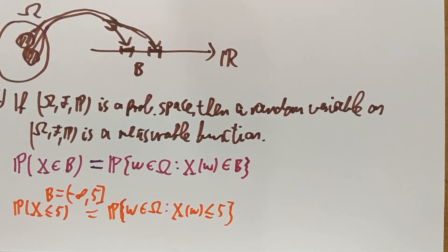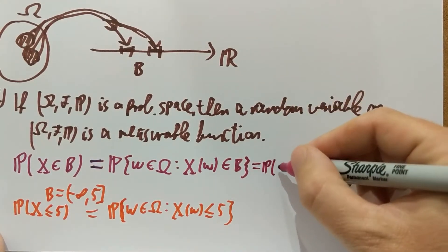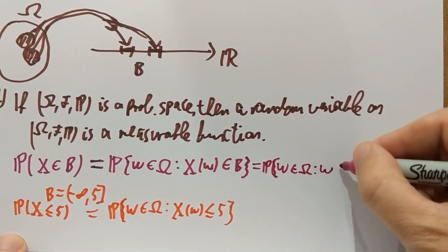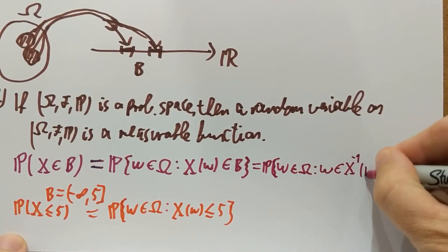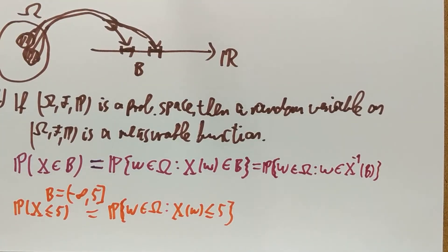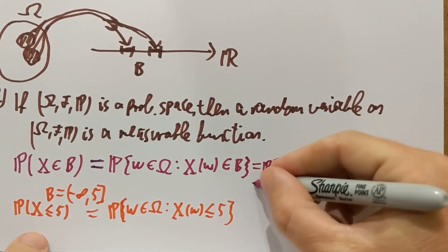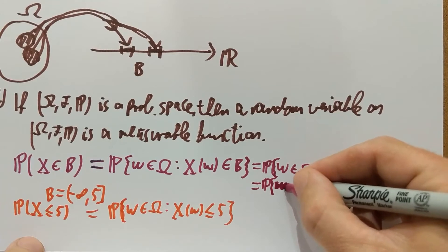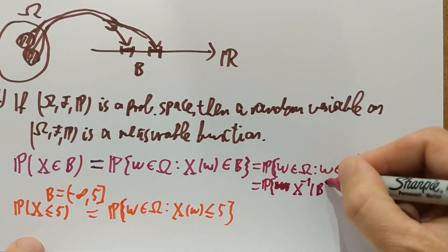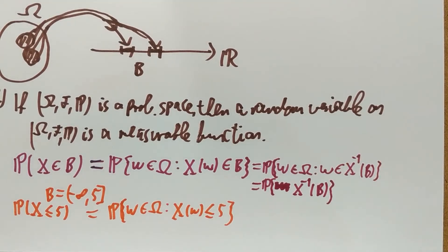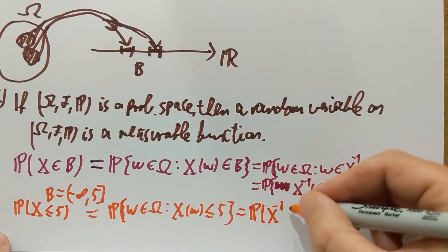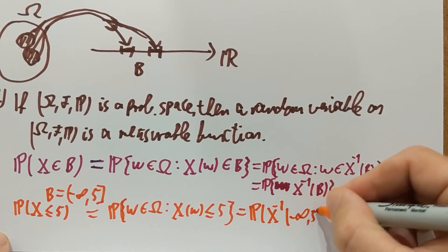And you can further transform this. You could say we're looking for the probability of the set of omegas such that ω belongs to the inverse image of B under X. In other words, you're simply asking about the probability of the inverse image under X of B. That's what you're really asking about. Proceeding with this example, you're simply asking about the probability of X⁻¹((−∞, 5]).